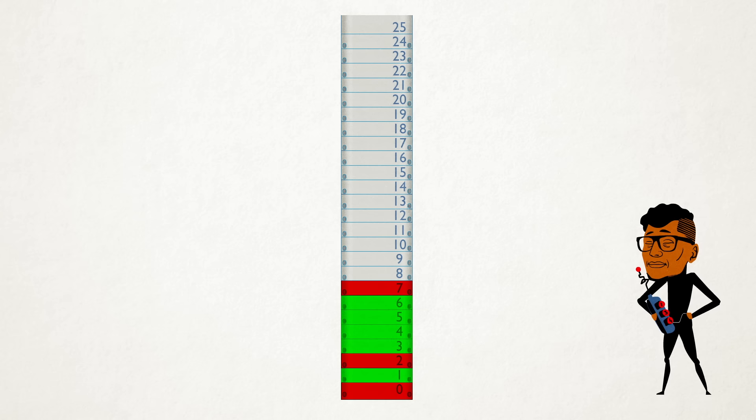If you start your turn one, three, or four levels above a losing level, then you're at a winning level. Otherwise, you're destined to lose.